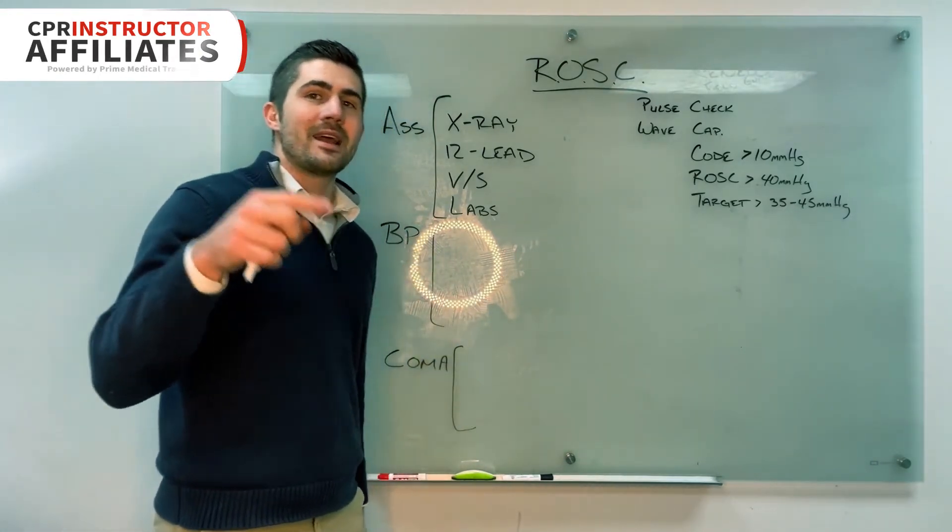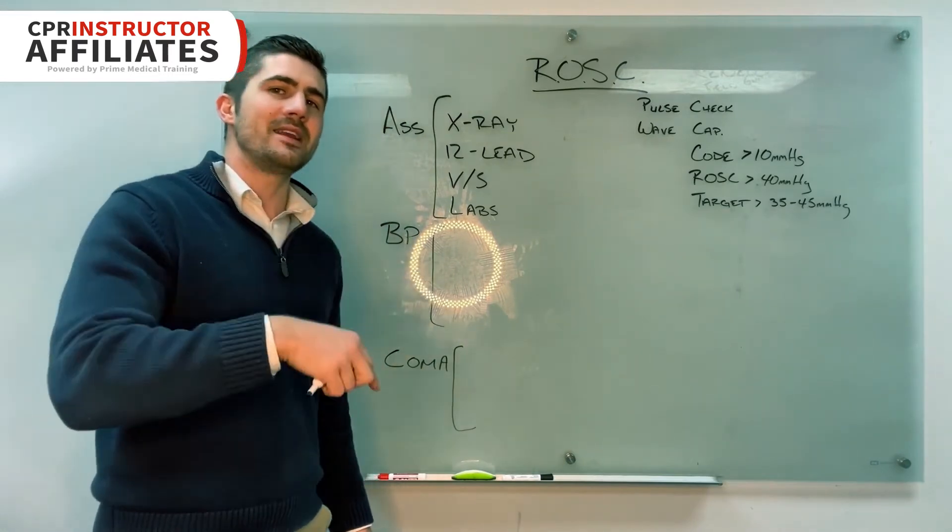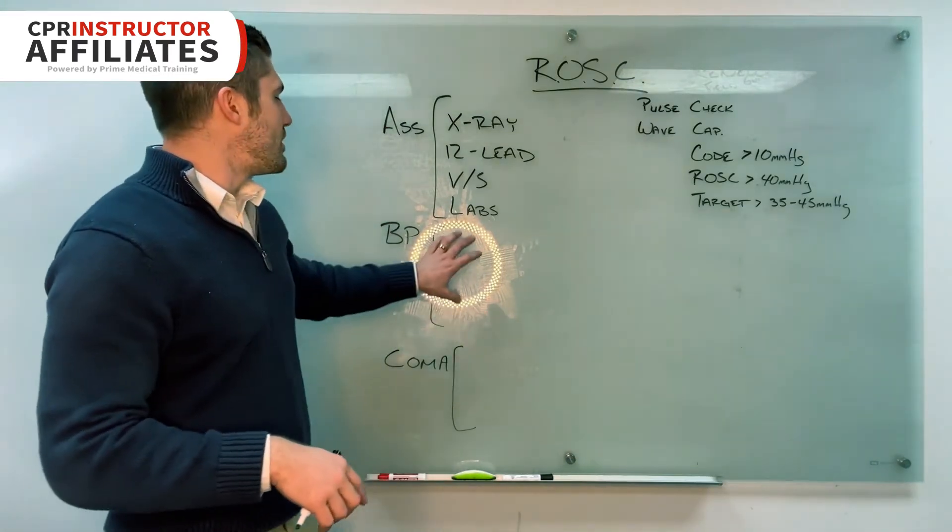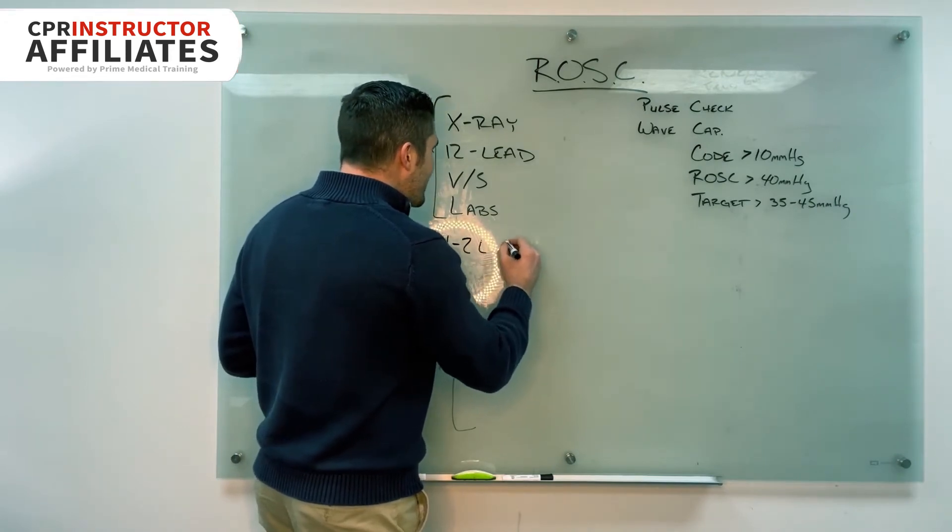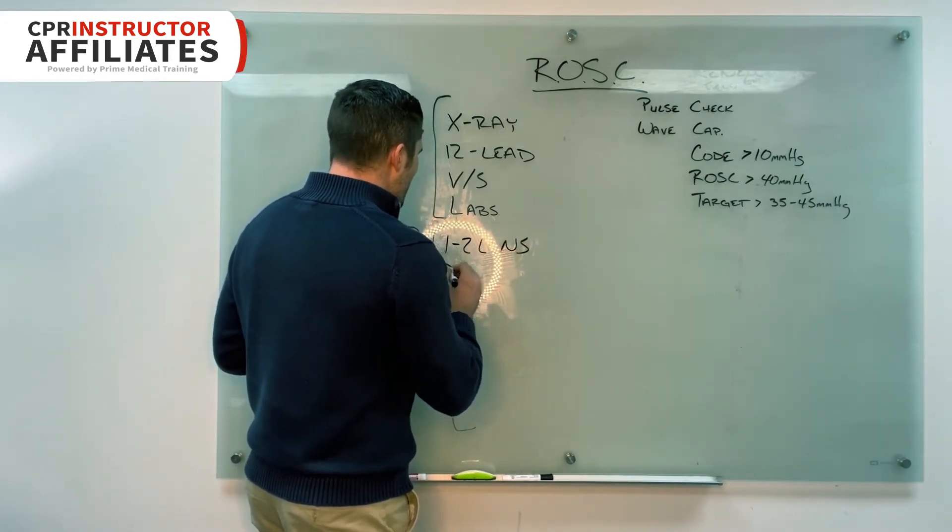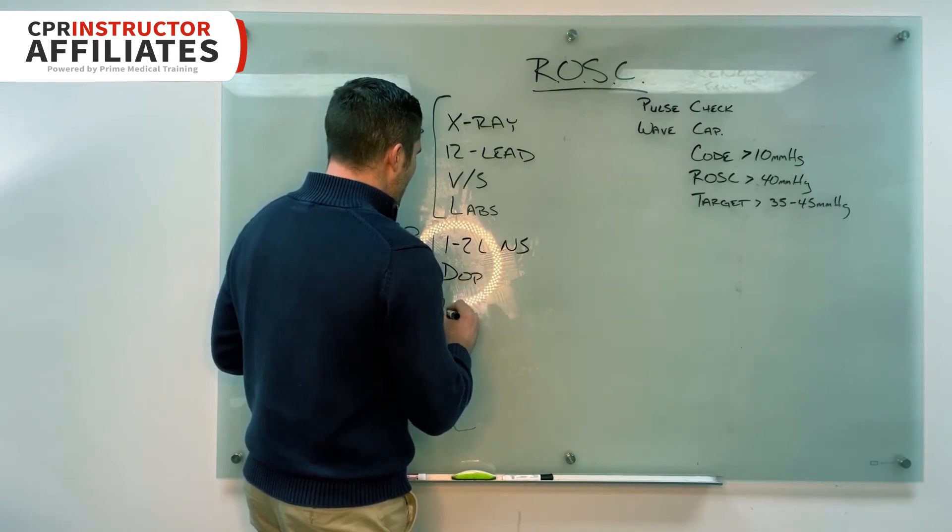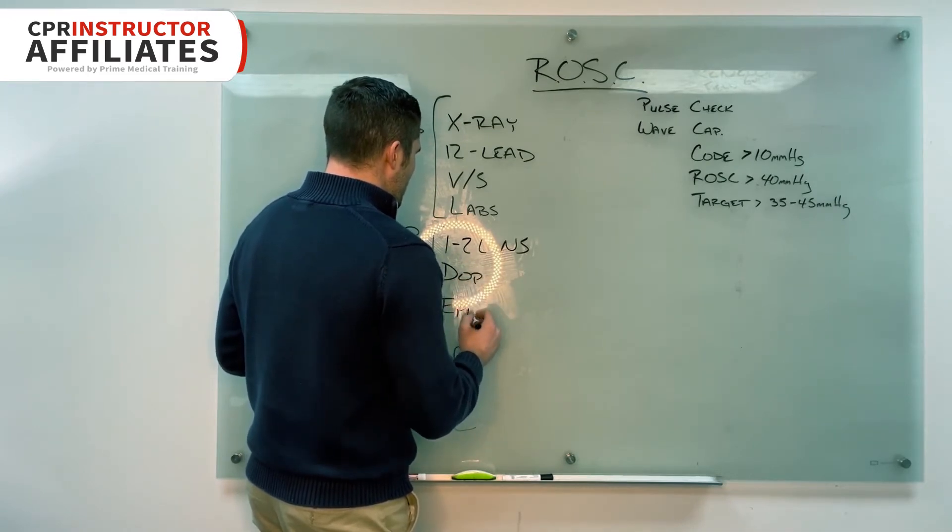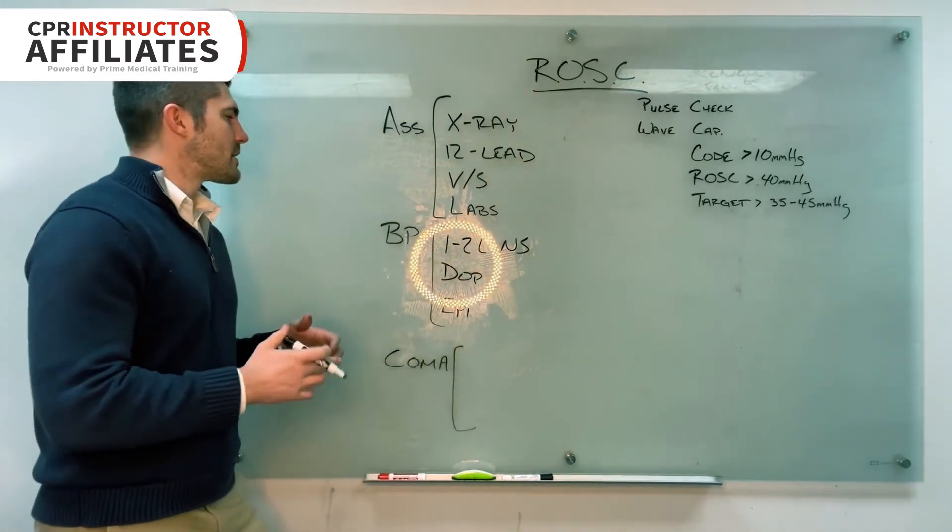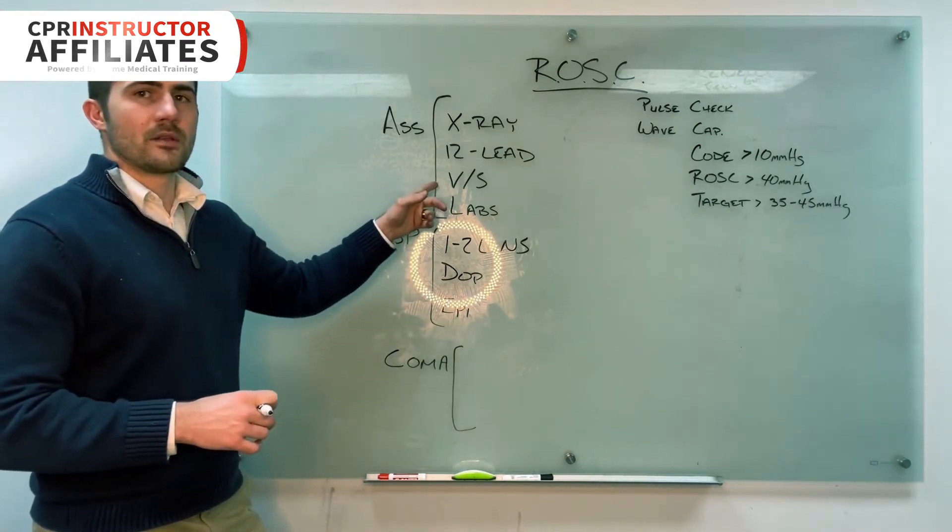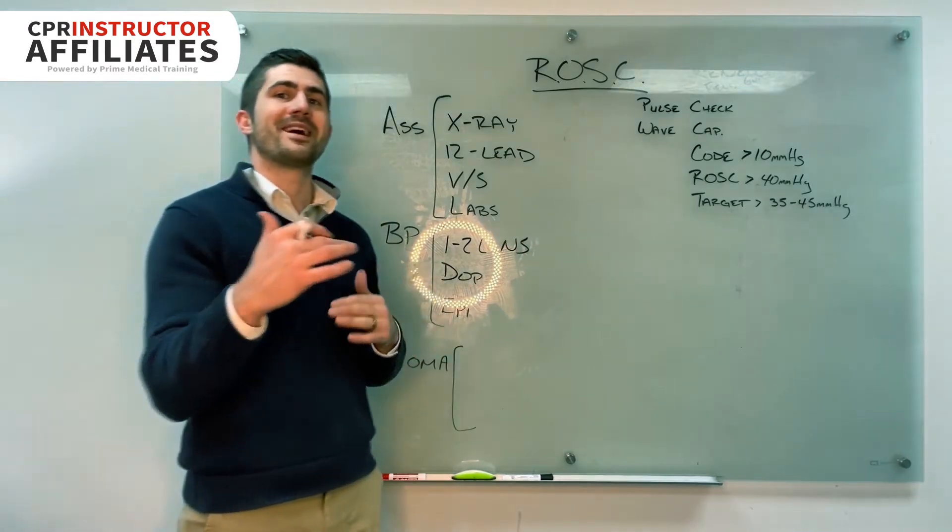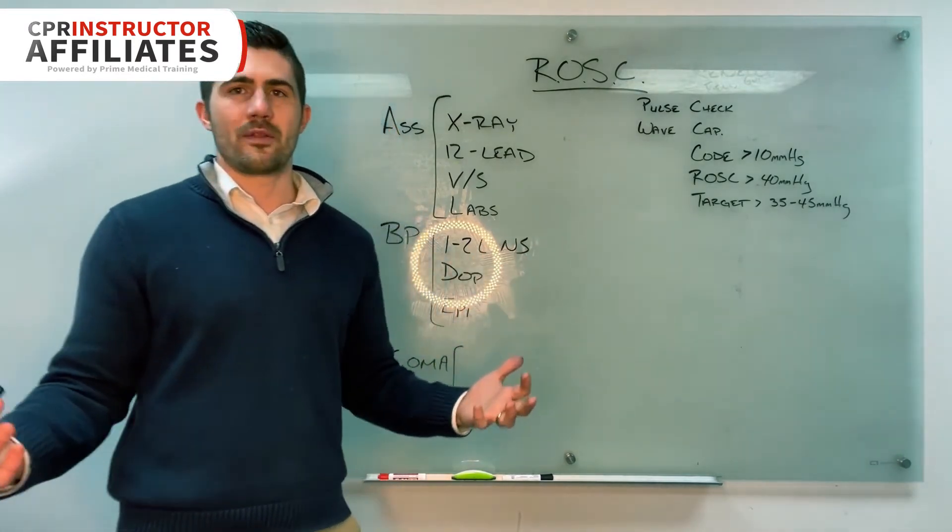So if you have less than 90 systolic, you're going to do some treatments, which is going to be one to two liters of normal saline, dopamine drip, epinephrine drip, any one of these, use your discretion to fix the blood pressure, but we only want to get the blood pressure up to 90 systolic. We don't go higher than that.